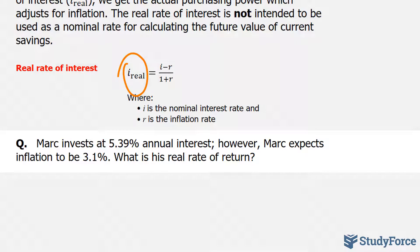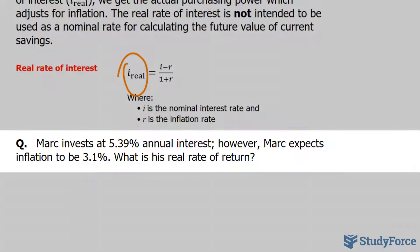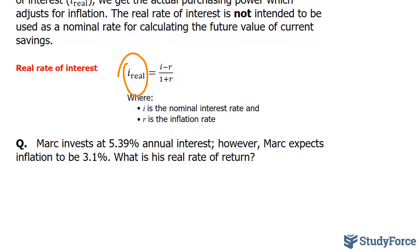Here's our question: Mark invests at 5.39% annual interest. However, Mark expects inflation to be 3.1%. What is the real rate of return? These values are true if you live in Canada — some banks do offer 5.39% as of 2024, and the inflation rate for 2023 was around 3.1%.